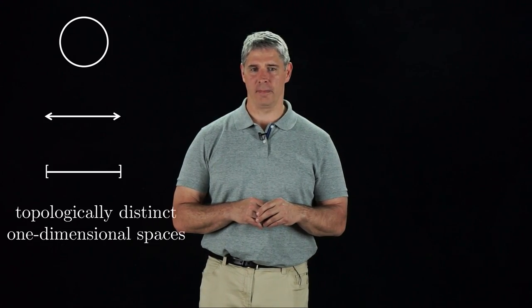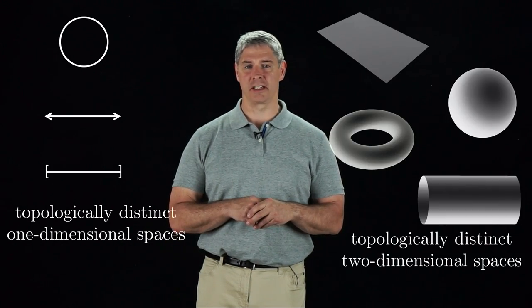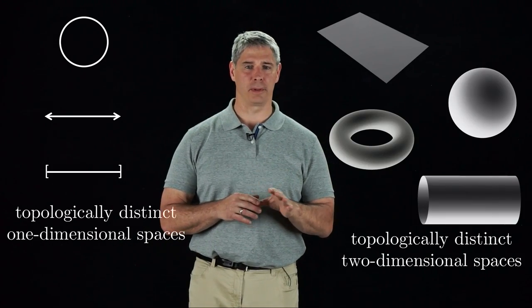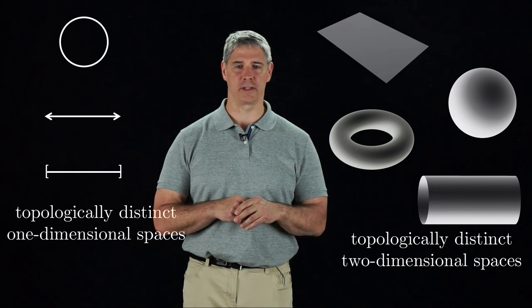Some topologically distinct one-dimensional spaces are the circle, the line, and a closed interval of the line. Topologically distinct two-dimensional spaces include the plane, the surface of a sphere, the surface of a torus, and the surface of a cylinder.